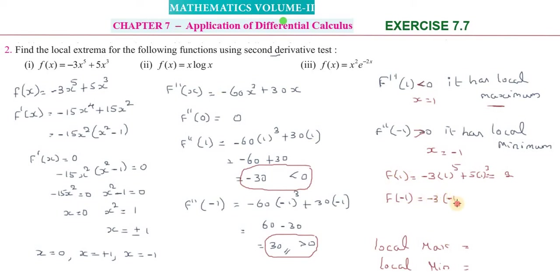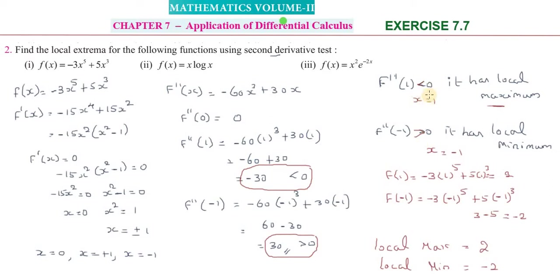For x = -1: f(-1) = -3(-1)⁵ + 5(-1)³ = -3(-1) + 5(-1) = 3 - 5 = -2. So the local minimum value is -2 at x = -1. To summarize: local maximum is 2 at x = 1, and local minimum is -2 at x = -1.